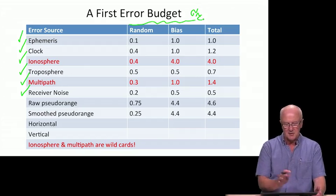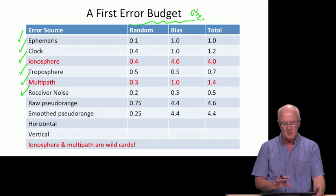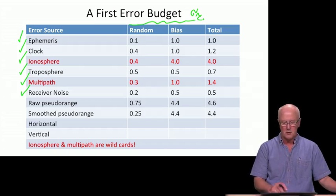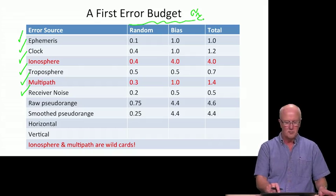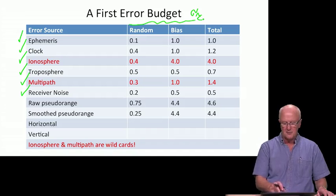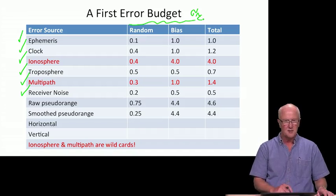So, ephemeris has a quickly varying component to the error. We call that the random component and the bias. Remember from our curves, two view graphs ago, that the bias is larger than random, and we see that here. Clock, one meter of bias, 40 centimeters of random error. Iono, four meters of bias, 40 centimeters of random. Tropo, 50 centimeters of both. Multipath, one meter of bias, 30 centimeters of random. Receiver noise, quite small. Do not, please do not take these numbers as fixed.